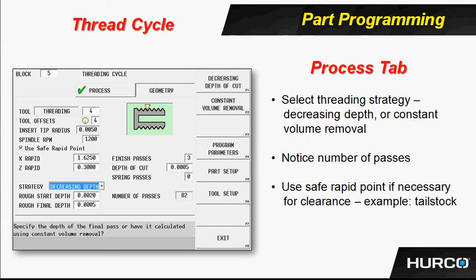We have finish passes there — how many finish passes do we want? We have three, and we want those to be half a thousandth each. That will also be taken into consideration when the number of passes is calculated in the decreasing depth strategy. You can put spring passes in there if you want — no extra material would be removed. That is just going to follow the final finish pass at depth, as many times as you tell it, to remove any spring that might have occurred in the part.